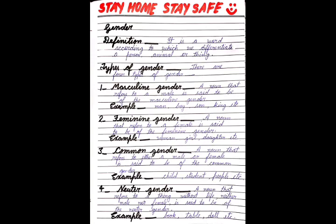Second is feminine gender. A noun that refers to a female is said to be of the feminine gender. This gender tells us about the female. Examples: woman, girl, daughter, etc.